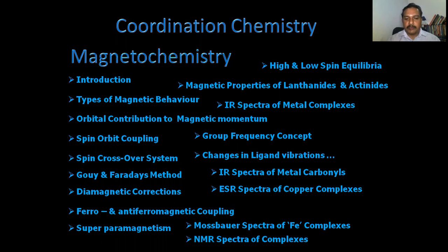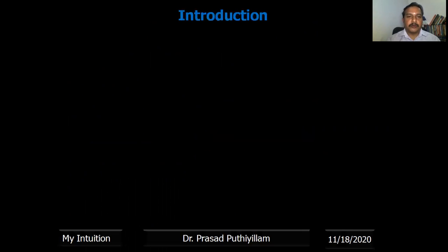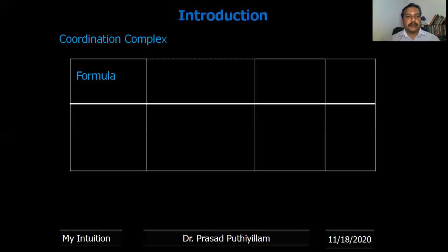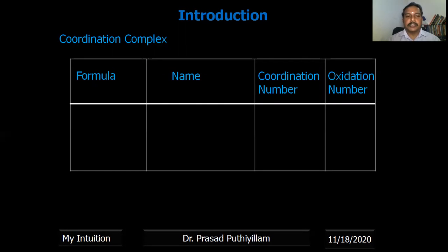Introduction to coordination complexes: we know that coordination complexes consist of a metal atom or metal ion connected to ligands. Taking some examples — looking at the formula, name, coordination number, and oxidation number — we already studied these basics at lower levels. The first example is [Co(NH₃)₆]Cl₃, hexamine cobalt(III) chloride.